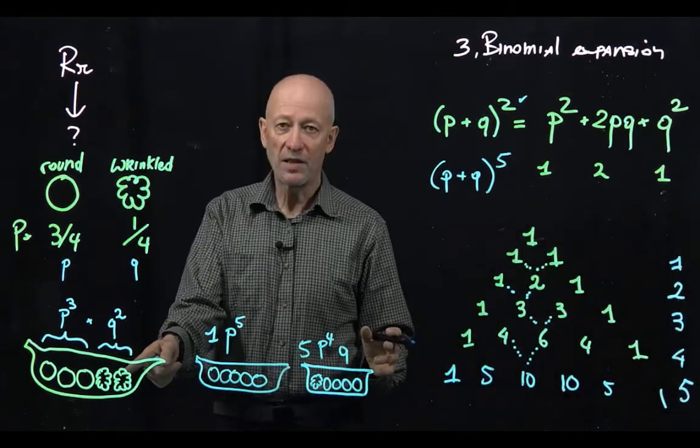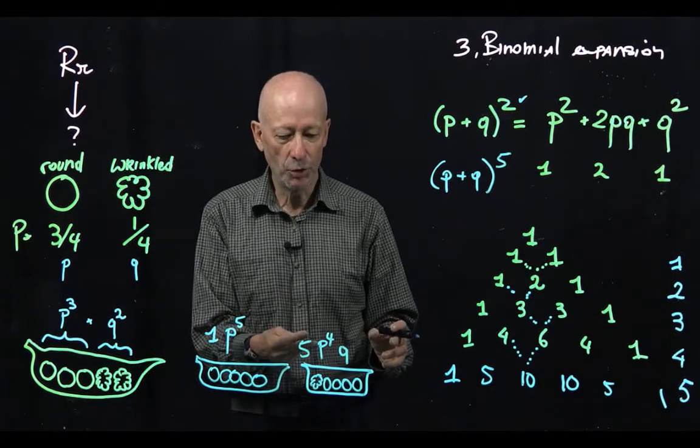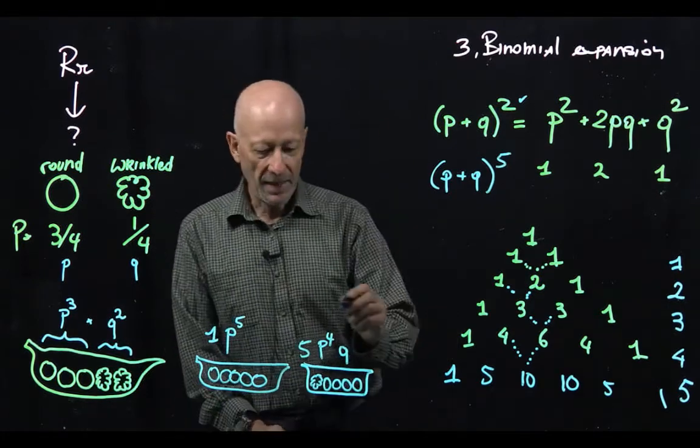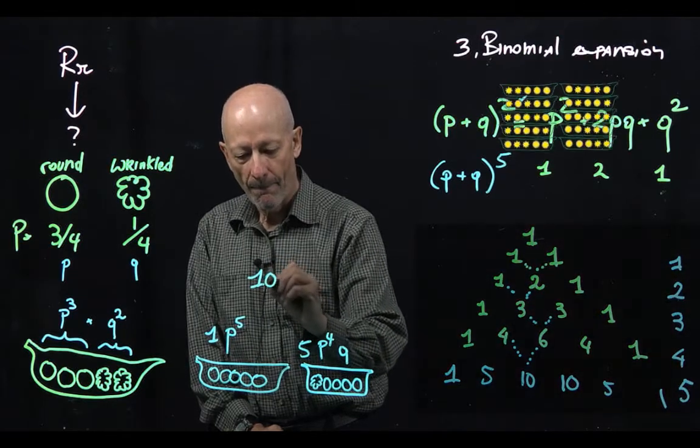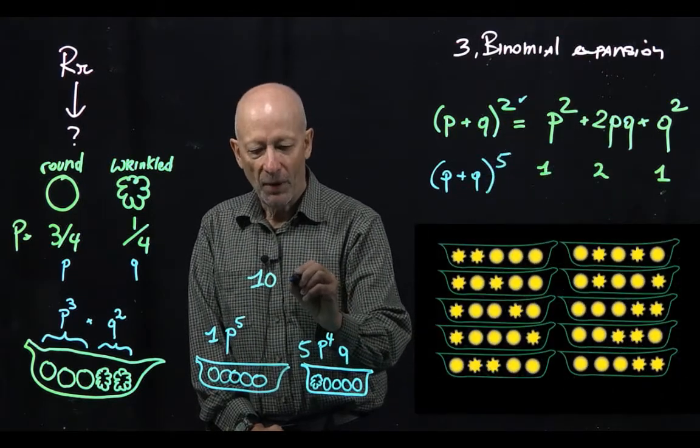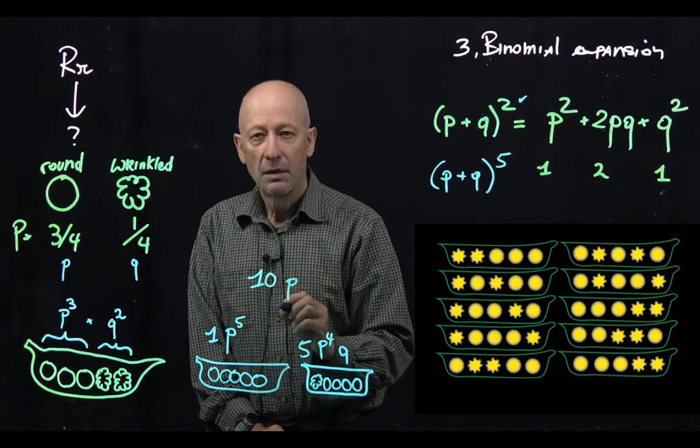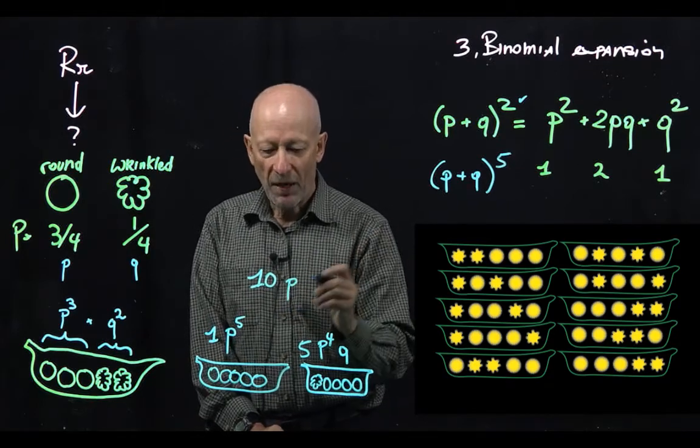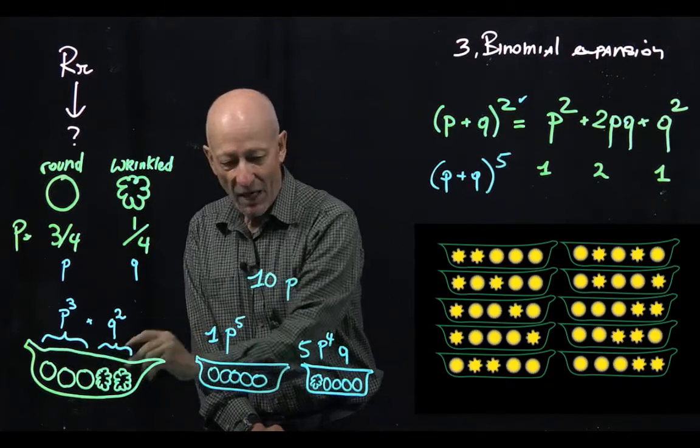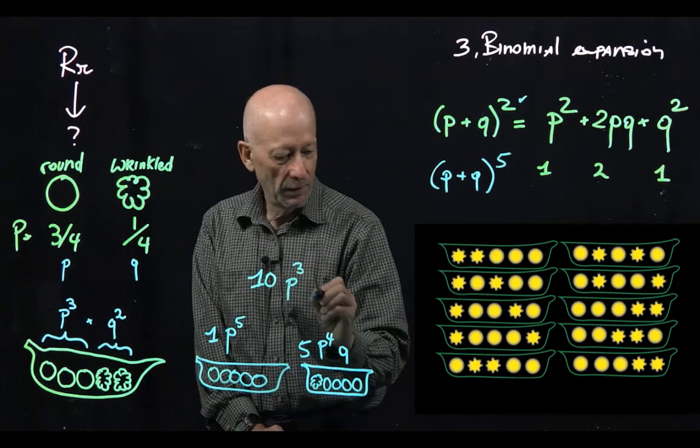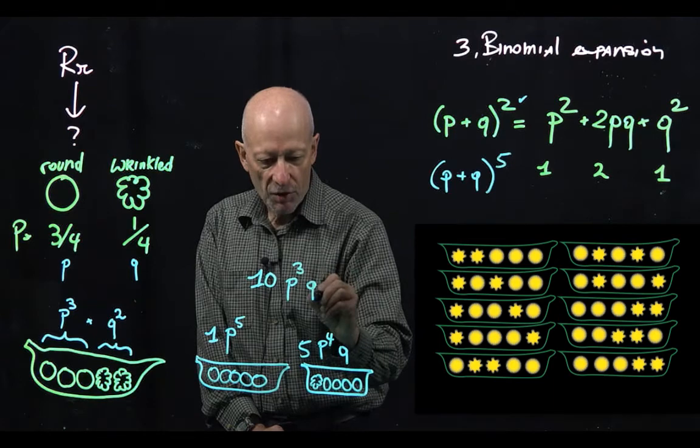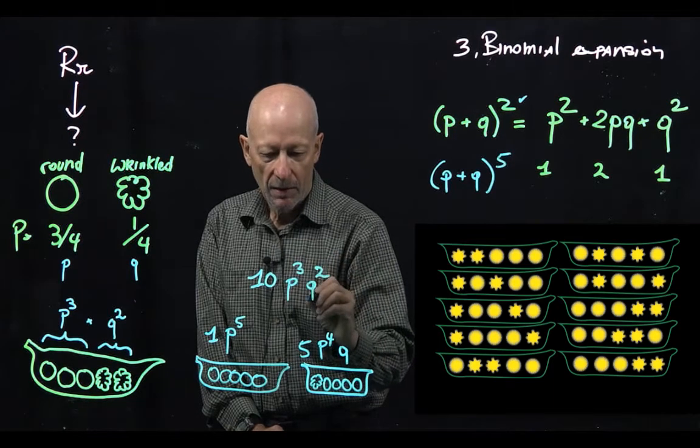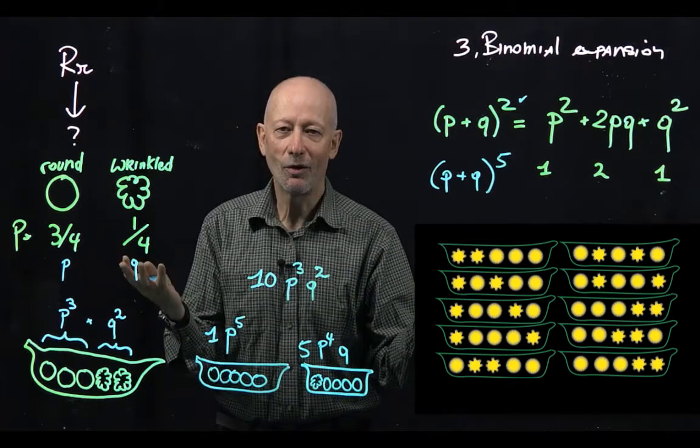For the pods that have 3 round and 2, I now take my coefficient of 10, I multiply times p to what power? Well, we said 3 rounds so p is to the 3rd power, 2 wrinkled so q is to the square, and that's all there is.